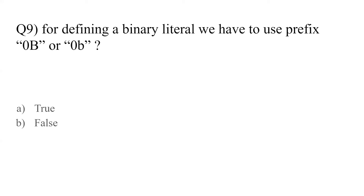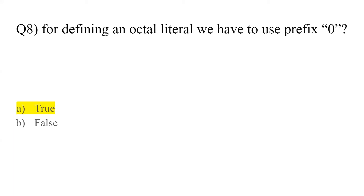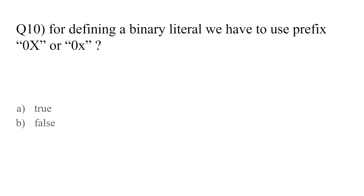Question number nine: for defining a binary literal, we have to use prefix 0 and capital B or 0 and small b. The answer is true — whenever you define a binary literal, use prefix 0B or 0b. For octal, we use just 0. Question number ten: for defining a hexadecimal literal, we have to use 0x or capital X, or 0 with a small x. The answer is again true. Note: I mistakenly wrote 'binary' in question ten — this is for hexadecimal, not binary.